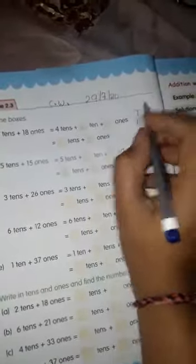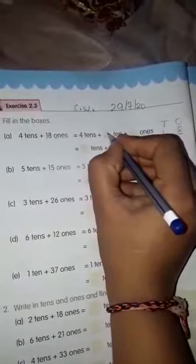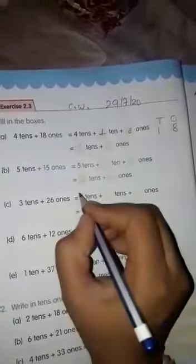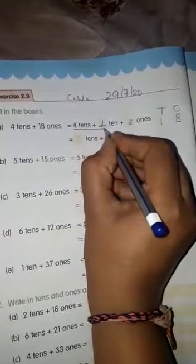So 8 will become in ones and 1 will become in tens. So we will write here 1 ten, 8 ones. Now next step, we will add 4 tens and 1 ten. 4 and 1 is how much? 5 tens, 8 ones.